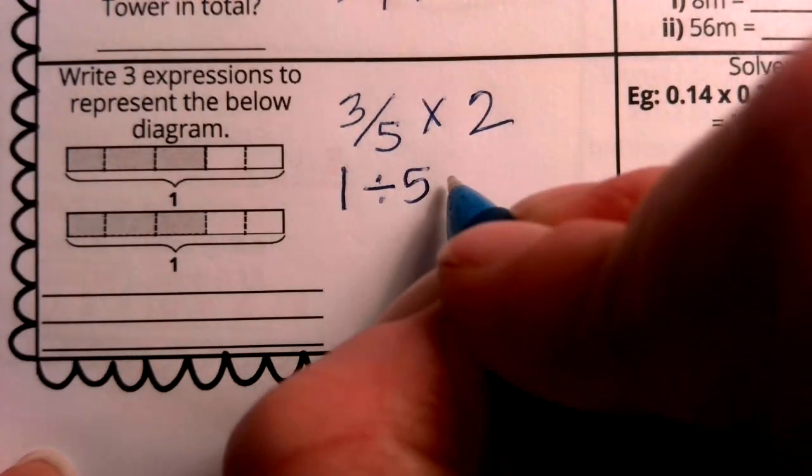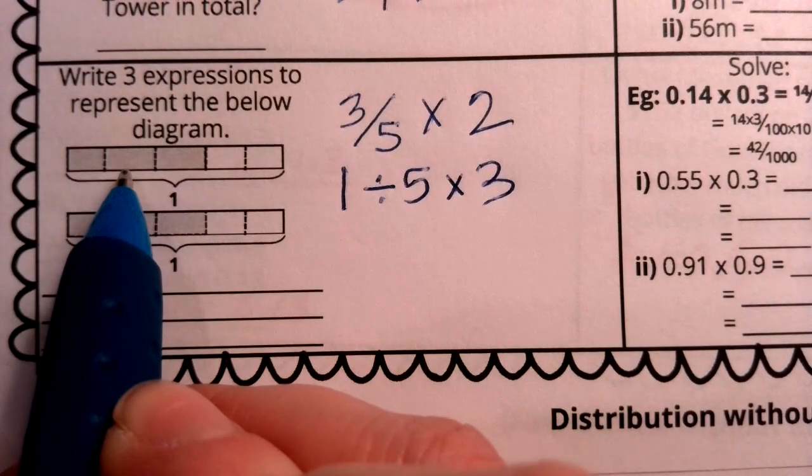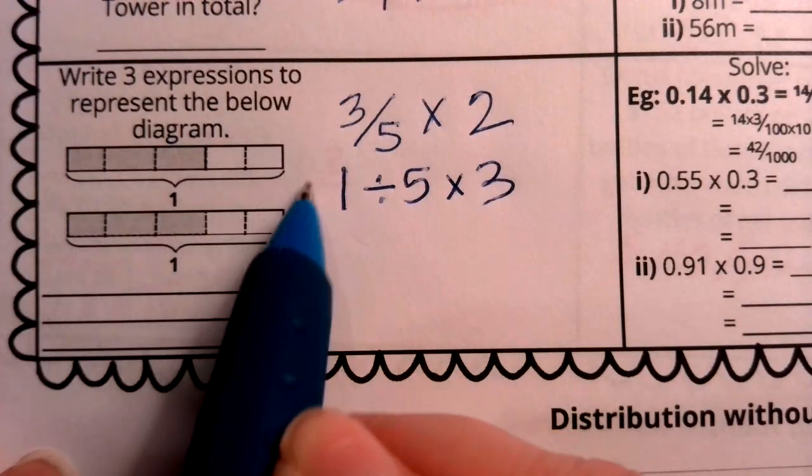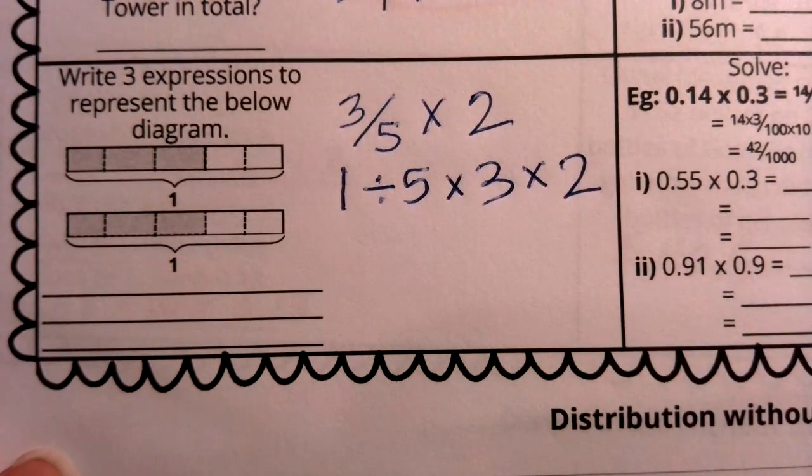I could also think about this being one whole divided into 5 parts. So I can actually write that out. One whole divided into 5 parts. And then I can remember, after that's divided into 5 parts, I captured 3 of them here. And then I did that 2 times. So I could multiply this by 2. There's another expression that I could build.